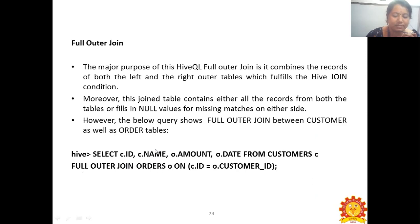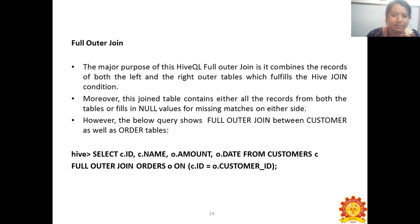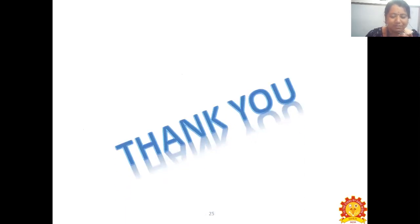To summarize, in this video we have seen: what is Hive and what Hive is not, the features of Hive, the architecture of Hive with its four components (Hive Clients, Hive Services, Processing Framework, and Distributed Storage), the partitioning and bucketing concepts with examples, and the join operations in Hive. Thank you.